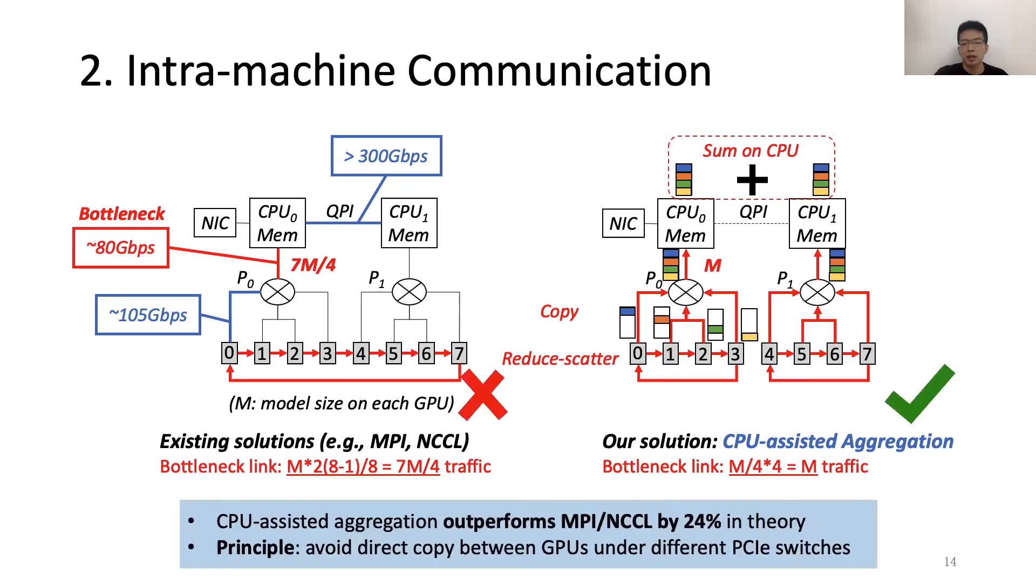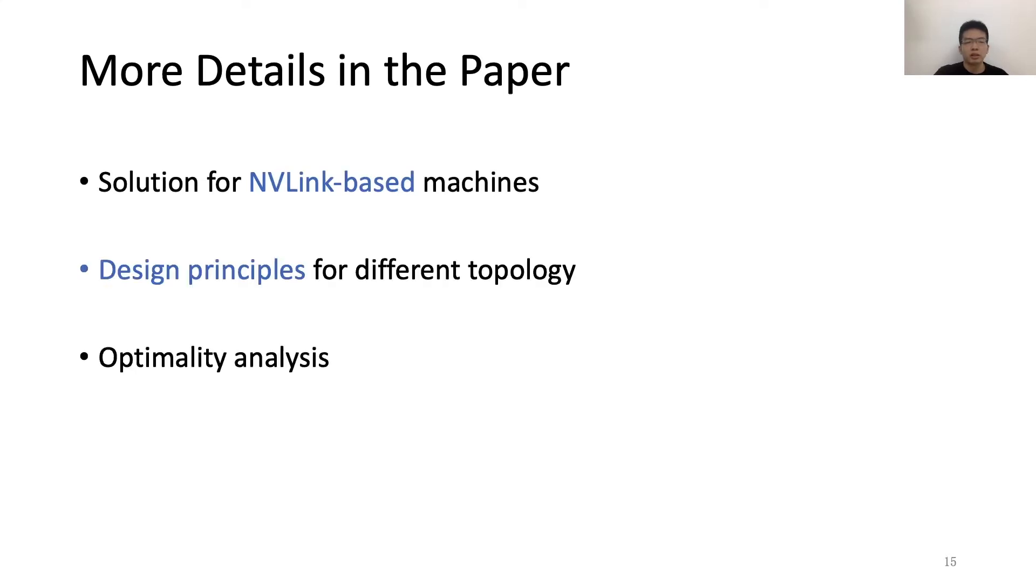And in the end, this CPU-assisted aggregation can outperform MPI or NCCL by 24% in theory. And we also summarized the design principle for this topology that we need to avoid a direct copy between GPUs under different PCIe switches. There are also more details in the paper, such as the solution for NVLink-based machines, the design principles for different topology, and the optimality analysis, and also the discussion about GPU-direct RDMA. And please refer to the paper for more details.